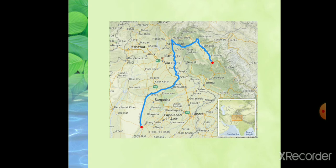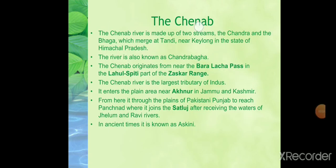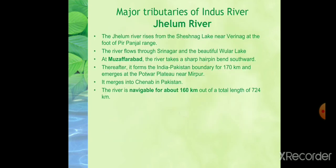The Chenab river is made up of two streams, the Chandra and Bhaga, which merge at Tandi near Keylong in the state of Himachal Pradesh. The river is also known as Chandrabhaga. It originates from near the Bara Lacha Pass in the Lahaul-Spiti part of the Zaskar range. The Chenab is the largest tributary of the Indus. It flows through Kullu and Chamba, between the Great Himalayas and the Pirpanjal range, then northwest through the Pangi valley, cutting a deep gorge near Kishtwar. It enters the plain area near Akhnur in Jammu and Kashmir, then flows through the plains of Pakistani Punjab to reach Panchnad, joining the Sutlej after receiving the waters of Jhelum and Ravi. In ancient times it was known as Askini.